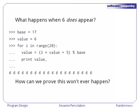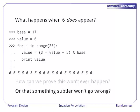How can we prove that this won't ever happen for an arbitrary seed in a random number generator? And how can we prove that something subtler won't go wrong?